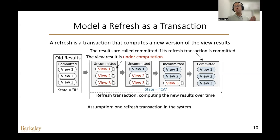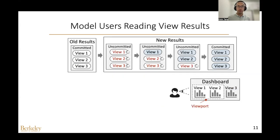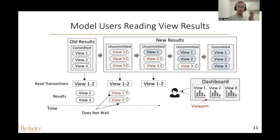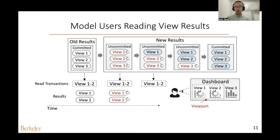For simplicity, we assume there is only one refresh transaction in the system, though the model can be extended to support multiple. The next question is how to model the user reading view results by looking at the screen. We model this looking-at behavior as a sequence of transactions called read transactions. What's unique about a read transaction is that if a requested result is not computed yet, it will not wait but directly return an under-computation state, and the interface will hide the corresponding visualizations, which will be updated when future read transactions return new results.